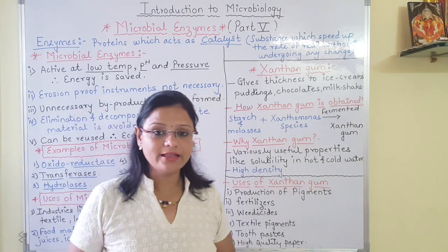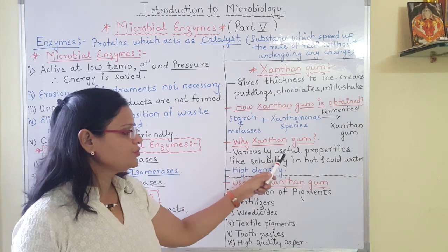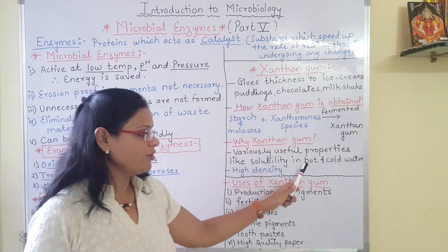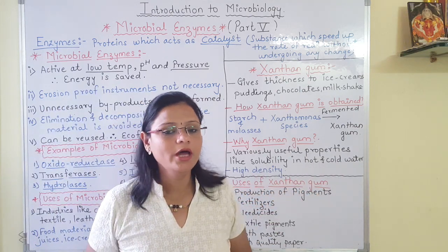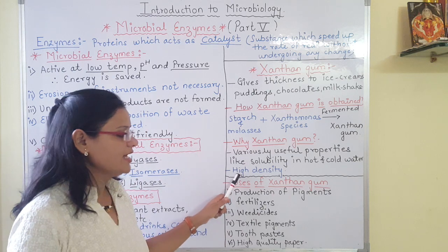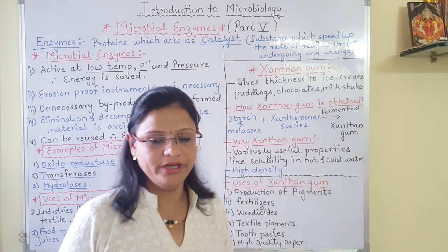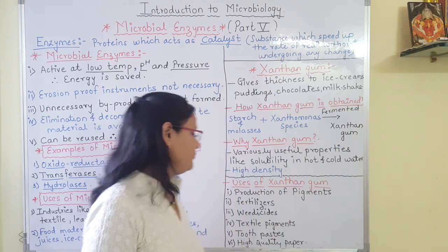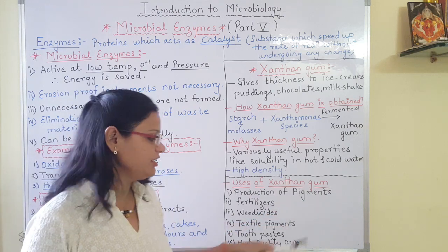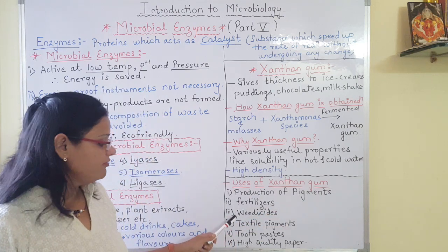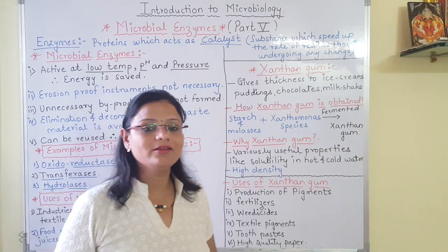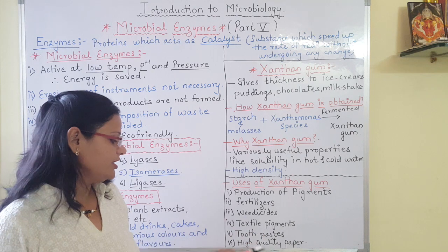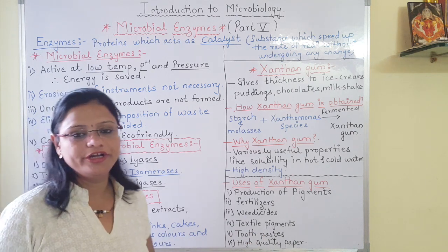Why is xanthan gum used? It has various useful properties like solubility in both hot and cold water, and it gives thickness or density to food material. Other uses of xanthan gum include production of pigments, fertilizers, and veticides — which means substances to kill unwanted weeds or grass — as well as textile pigments, toothpaste, and high quality paper.